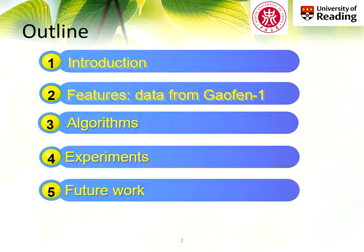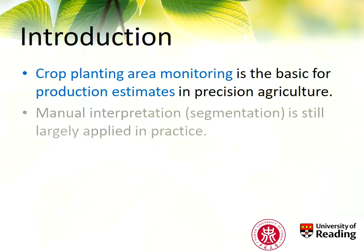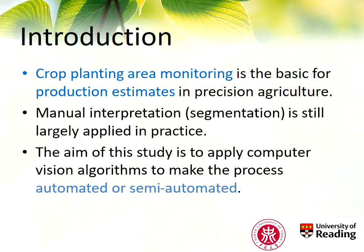I will briefly introduce the data and algorithm we used, experiment results, and future work. Crop planting area monitoring is the basic foundation for production estimates, yields, and precision agriculture. Gelfand is a large project in China, planned to have six satellites launched between 2013 and 2016. Gelfand-1 is the first, launched April 2013, and one of its main purposes is precision agriculture.